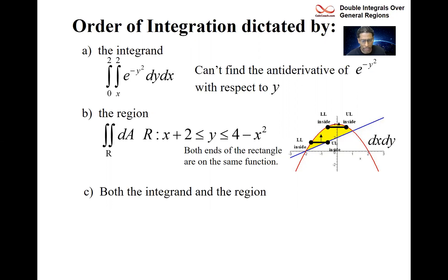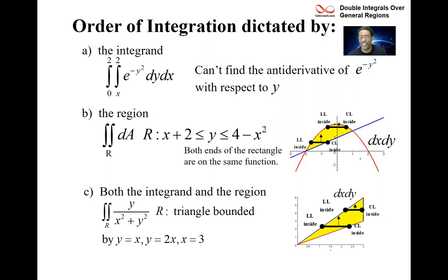Here's our example. We have the integrand y over x squared plus y squared, and then the region is bounded by three lines: one's a vertical line x equals 3, and the other two are y equals x and y equals 2x. One has a more steep slope than the other.